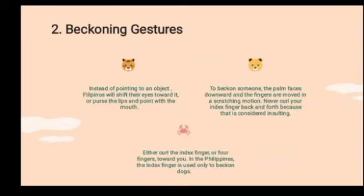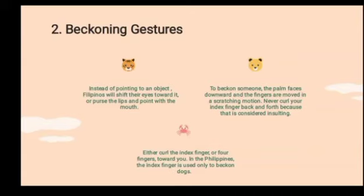The second is the beckoning gesture. Instead of pointing to an object, Filipinos will shift their eyes toward it or purse their lips and point with their mouth, rather than lifting a hand, finger, or arm. Filipinos sometimes use their pursed lips to point at a certain object or direction. Many foreigners find this funny and confusing, but it is very common and unique to the Philippines. Do not confuse it with a kiss.